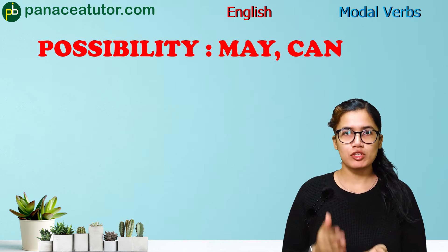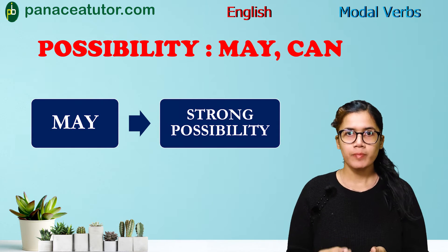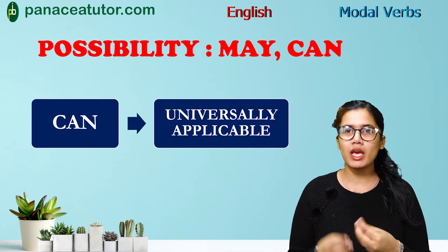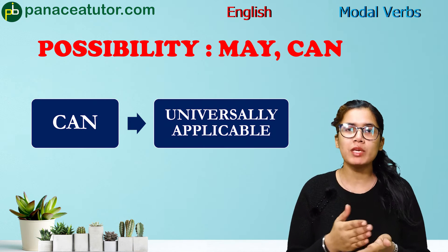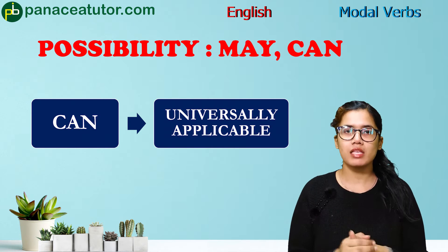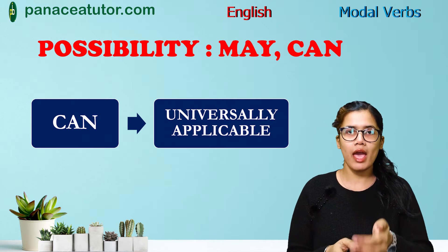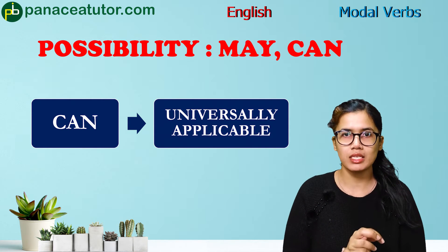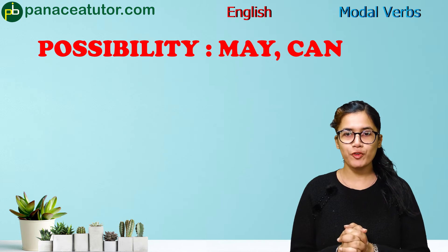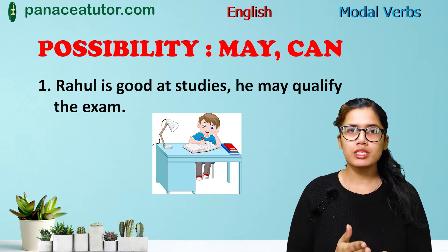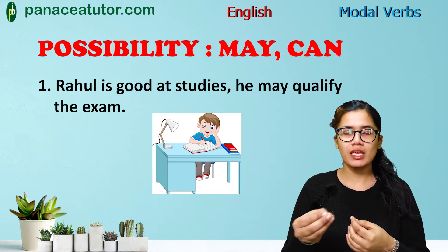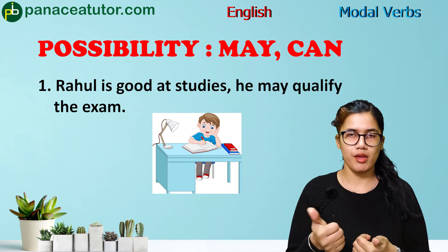May and can are also used for possibility. For strong possibility, we use may, and for universally applicable possibilities, we use can. For weak possibility, we use the modal auxiliary might. Since this video focuses on may and can, examples of might are not covered here, but remember: weak possibility uses might.